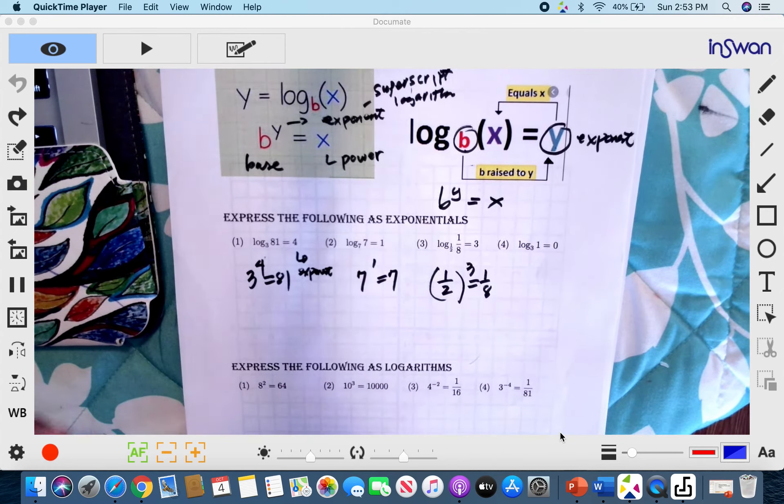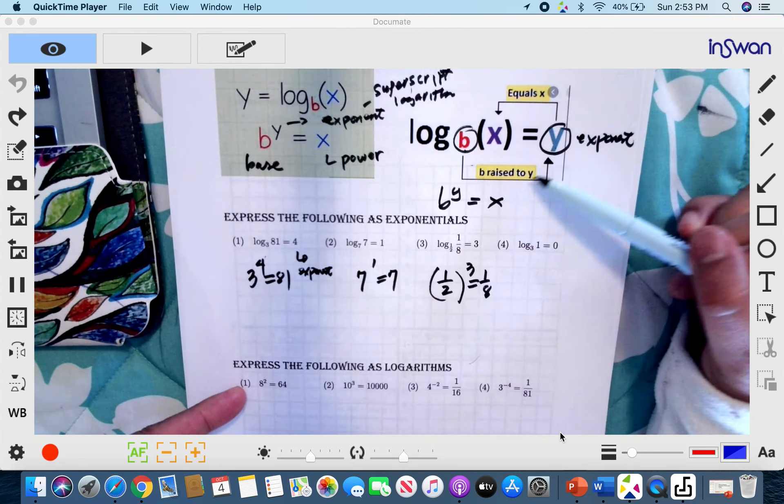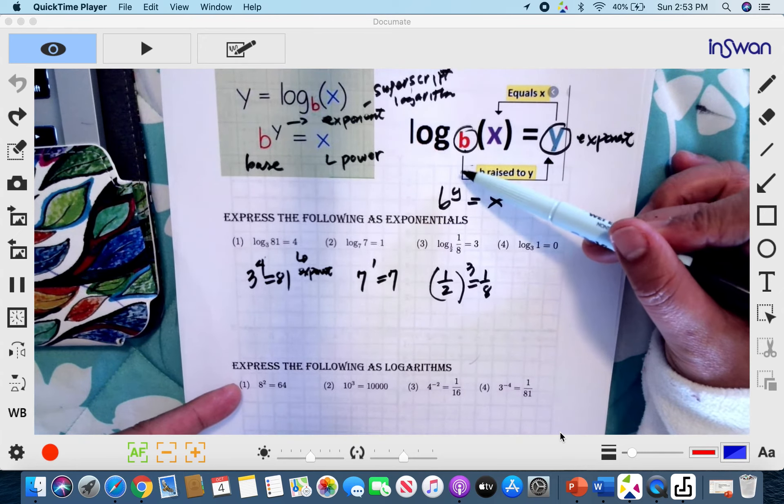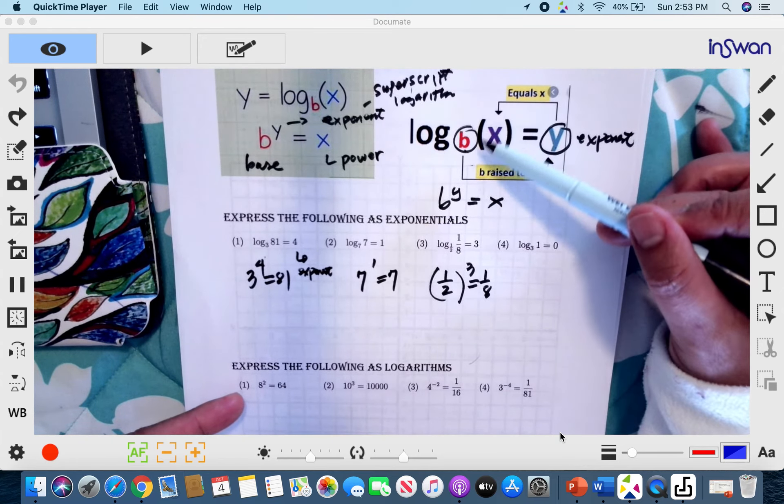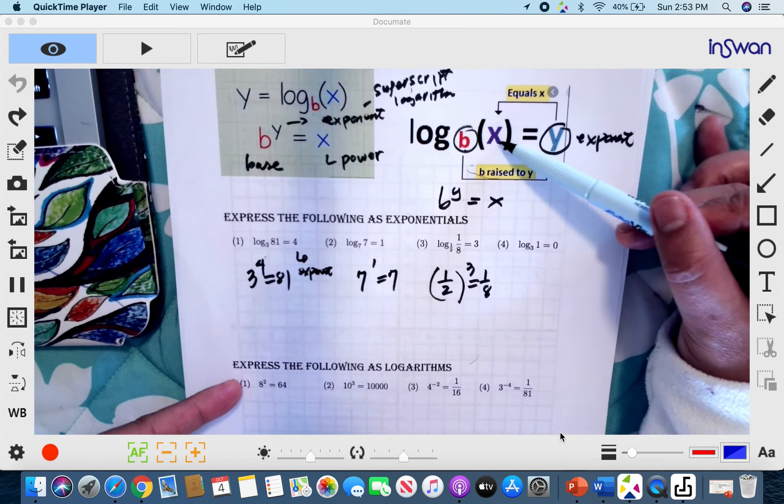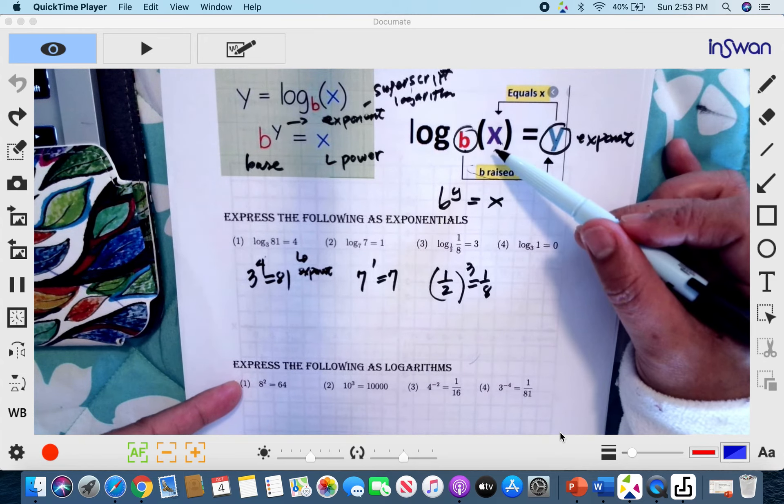It's like, it's going around. As you can see, the direction here, if you change the logarithm to exponential, it goes in a counterclockwise direction from the base to the exponent to the superscript, so the power.